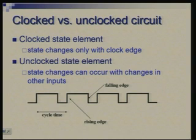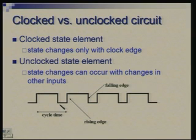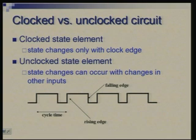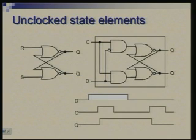A clock, as we know, is a periodic signal and the period is called clock cycle time or clock period. Typically one of the edges is assumed to be the active edge — either the rising edge or the falling edge — and that is the edge which causes the state transitions. So suppose in a particular design we are going with the convention of keeping the rising edge as the active edge, then all state changes in the clocked elements will take place with that rising edge. Now let us look at examples of clocked and unclocked circuits.